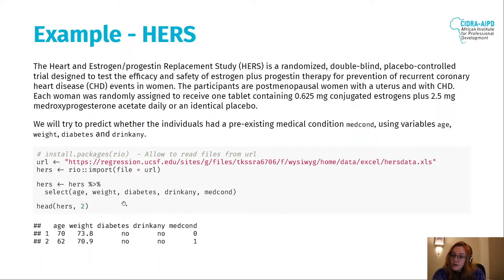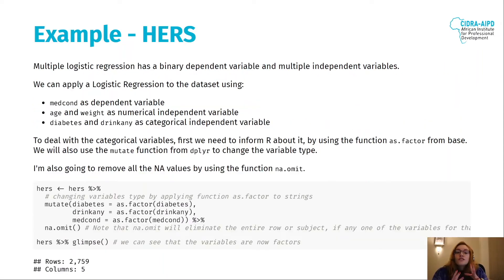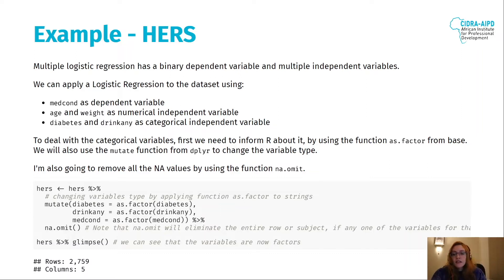Age and weight are numerical variables, and medcont is our outcome. Continuing with the HERS data: multiple logistic regression, just like before, has a binary dependent variable, but now we have multiple independent variables. Medcont is the dependent variable; age and weight are numerical independent variables; diabetes and drinkany are categorical independent variables.